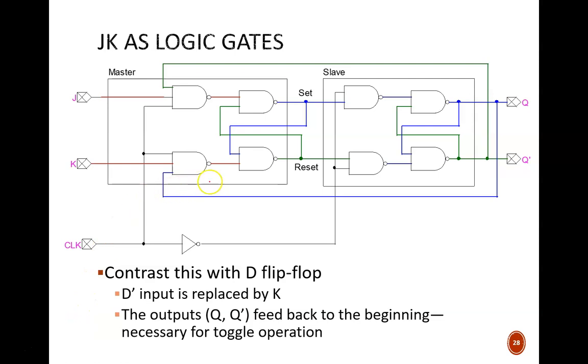Second, those leading NAND gates now have three inputs. The Q' output loops all the way back up here, and the Q output loops all the way back down here. This is what allows for the toggle operation. When toggling, the start of the circuit needs to know what the current outputs are.